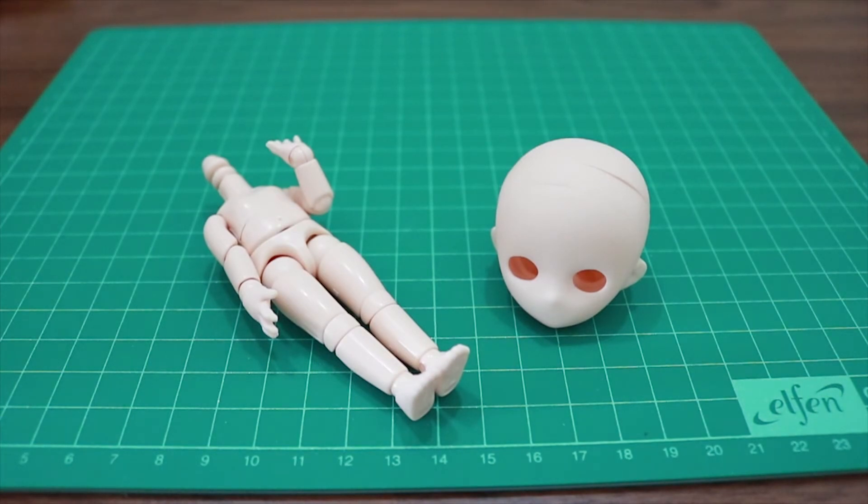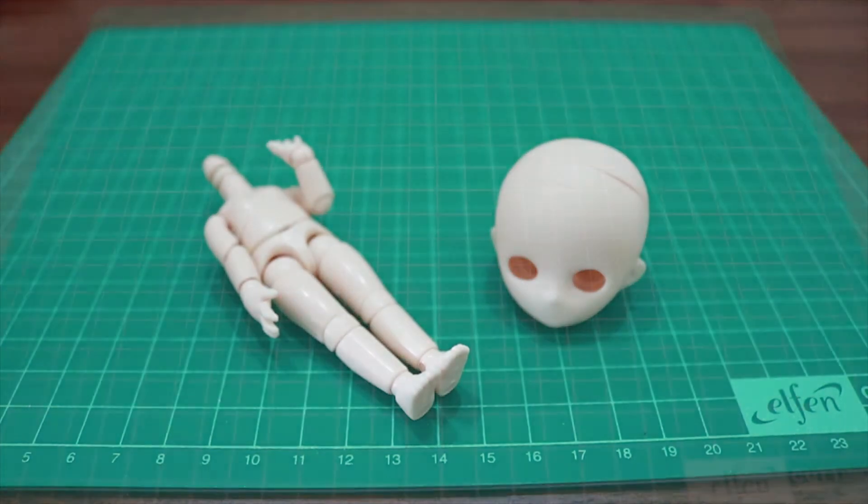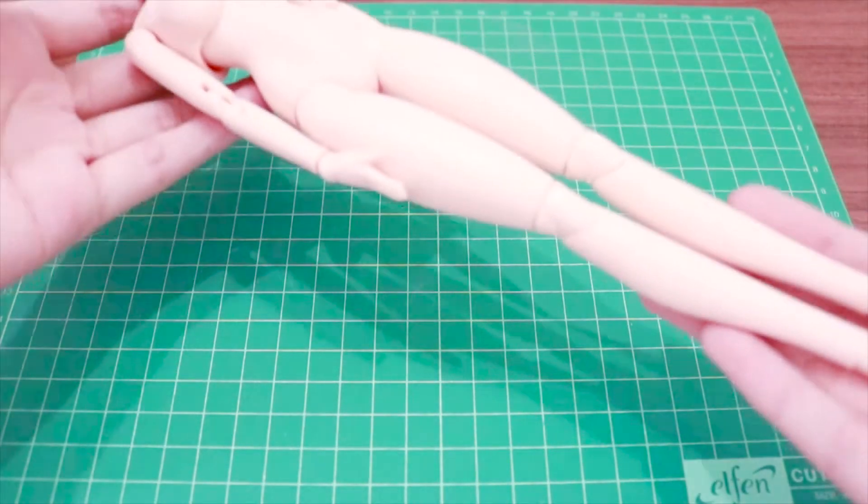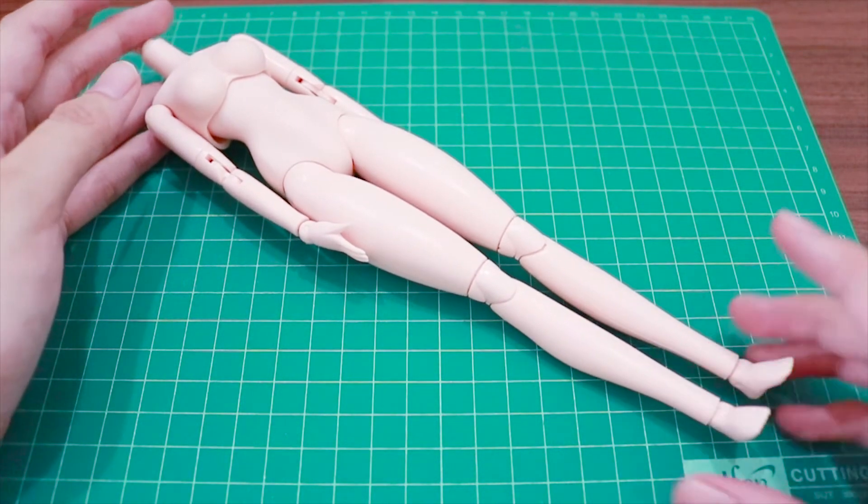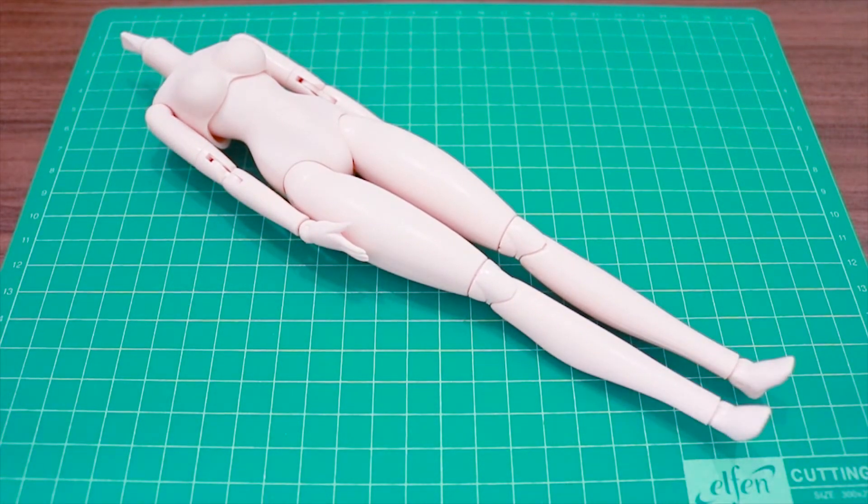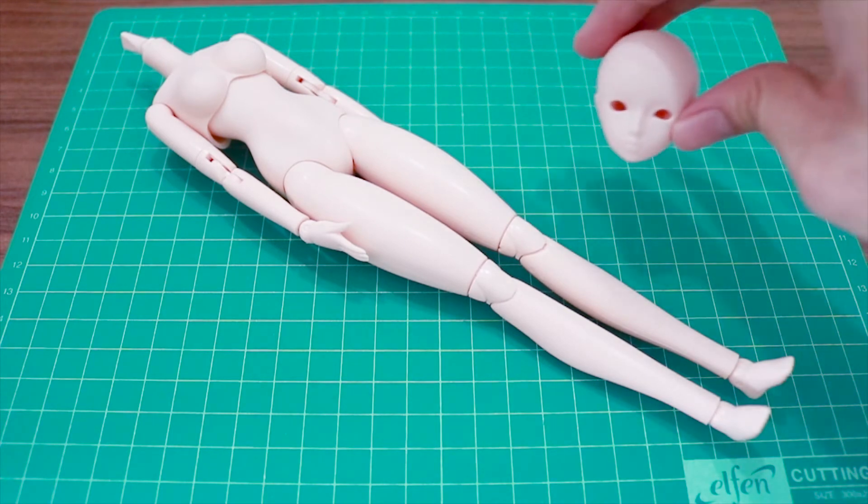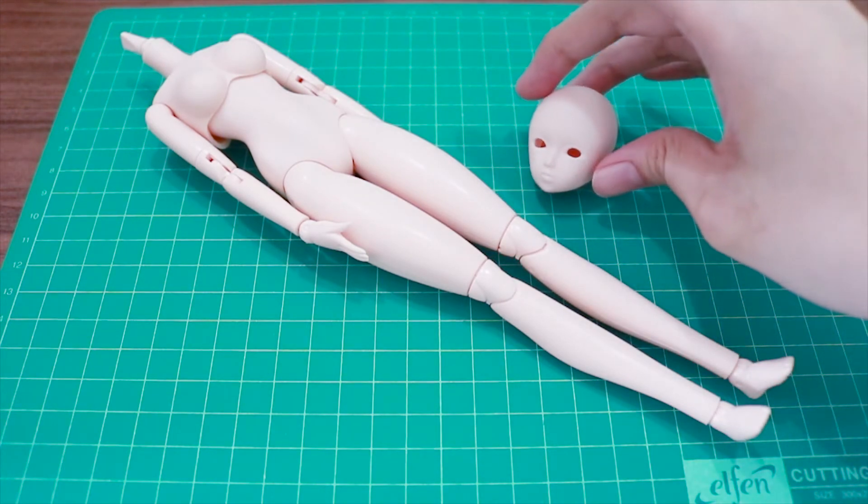And then, let me introduce the bigger one. I ordered 27cm white skin Obitsu body with soft bust, and her head was Gretel 27cm.